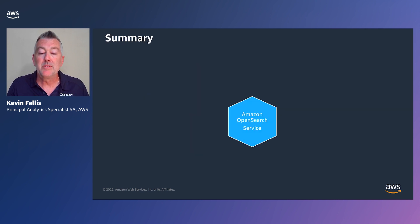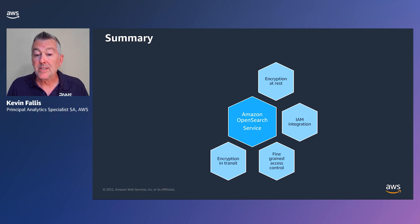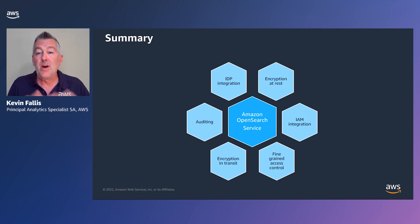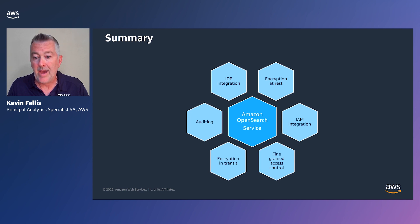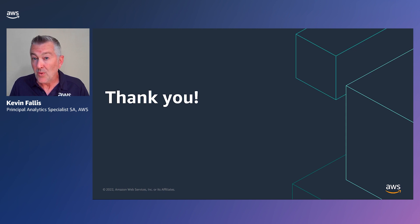In summary, the Amazon OpenSearch service supports the following: encryption at rest, IAM integration, fine-grained access control, encryption in transit, auditing at both the control plane and the data plane, and IDP integration with your favorite provider for single sign-on activities. I really want to thank you for your time today. I know that your time is valuable, and we really appreciate your interest in the Amazon OpenSearch service. Hopefully this information has enabled you with the details you need to explore further. Thank you.